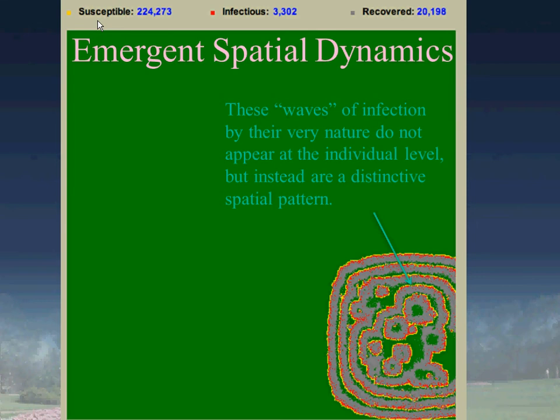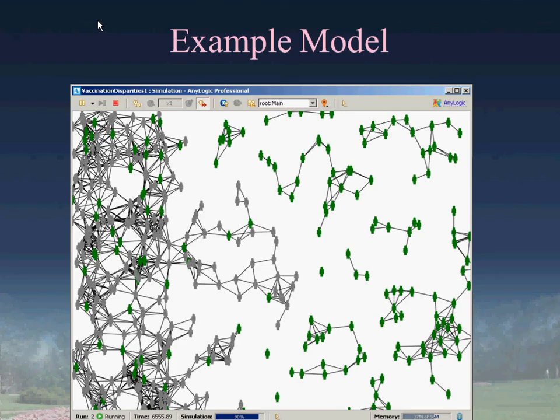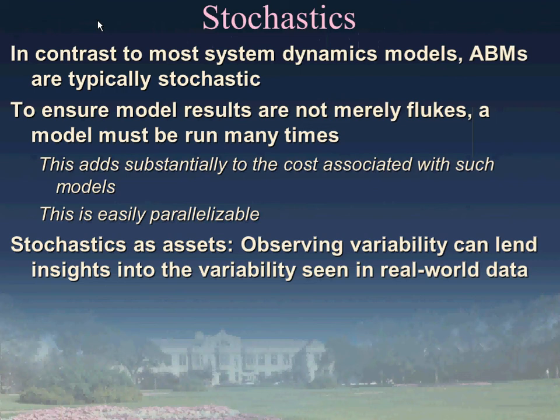We see spatial dynamics occurring at different forms over topologies and networks as well. In contrast to system dynamics models, agent-based models are typically stochastic—not always; there are deterministic examples like Conway's Game of Life—but for the most part they're stochastic. We saw that in our last model: the fringes at the periphery of the expanding network and the scattered dots within the internals of that wave of infection are indications of stochastics. Because of this, to ensure model results are not merely flukes, the model has to be run many times.